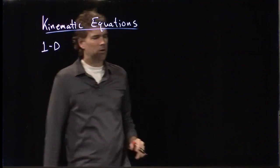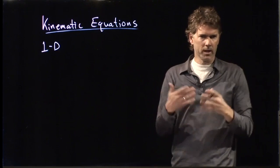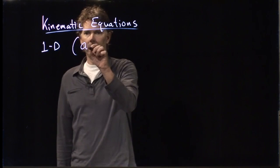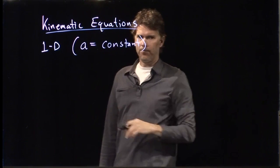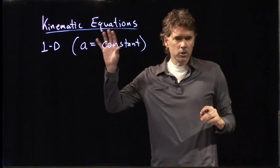In 1D we're just going to talk about horizontal or vertical motion — we're not going to combine the two just yet. We're going to make one more important assumption, which is that the acceleration is constant. It turns out that if the acceleration is not constant, then you can't use the kinematic equations we're going to talk about. So this is an important constraint.